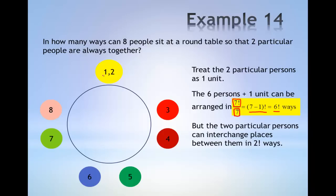Furthermore, the two individuals can be interchanged, as shown, which results in two factorial ways of arrangement.